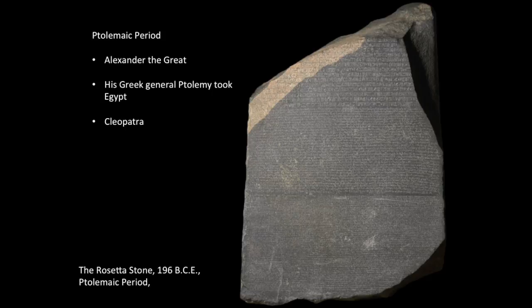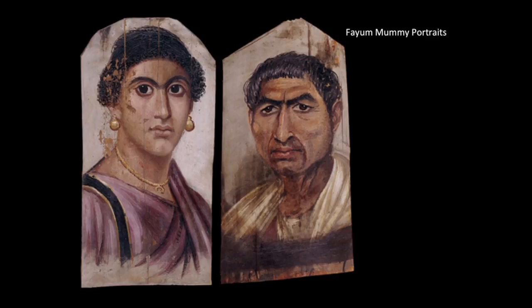The Ptolemaic Period: Alexander the Great was a Greek general who had conquered most of the known world, though he never made it to India. His Greek general Ptolemy was put in control of Egypt. Cleopatra was Ptolemy's granddaughter. The Rosetta Stone is from this period. The Fayum mummy portraits are encaustic paintings wrapped around a mummy's body where their face would be, showing an incredible mix of Egyptian stillness and solemnity with Greek realism. These hail from a point in Egyptian history during the Ptolemies when Greeks and people from all over the Mediterranean, Africa, and the Middle East had come to Egypt to trade, to live, and to work.